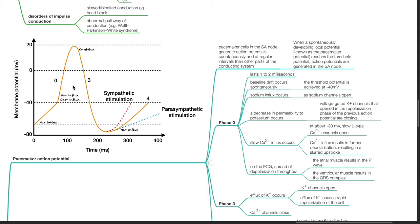During phase 0, this lasts for 1 to 2 milliseconds. Baseline drift occurs spontaneously. The threshold potential is achieved at negative 40 mV. Sodium influx occurs as sodium channels open. A decrease in permeability to potassium occurs. Voltage-gated potassium channels that open in the repolarization phase of the previous action potential are closing. Slow calcium influx occurs at about negative 30 mV. Slow L-type calcium channels open.